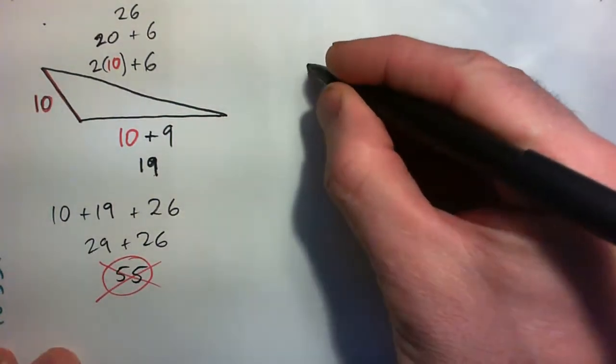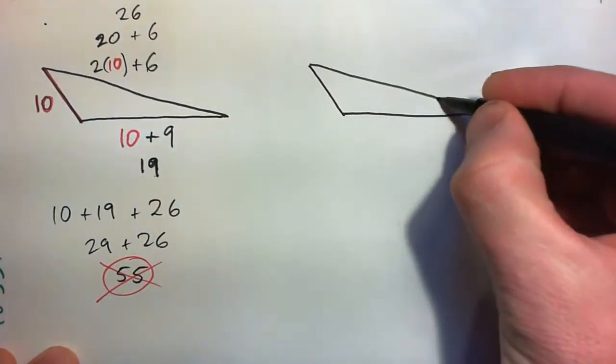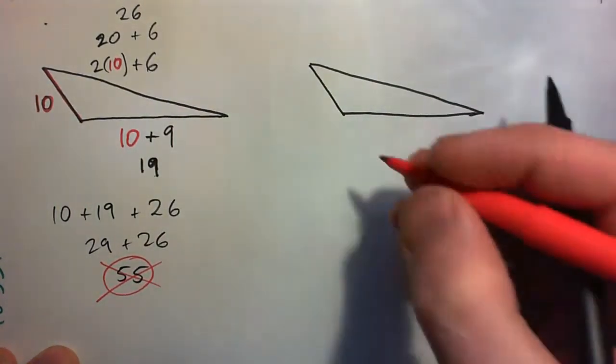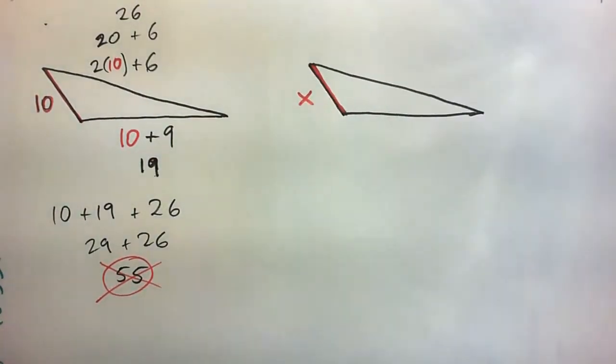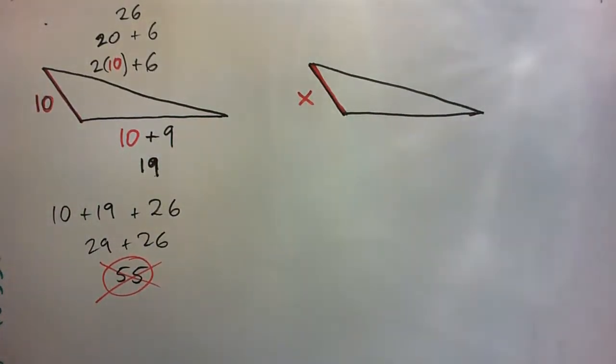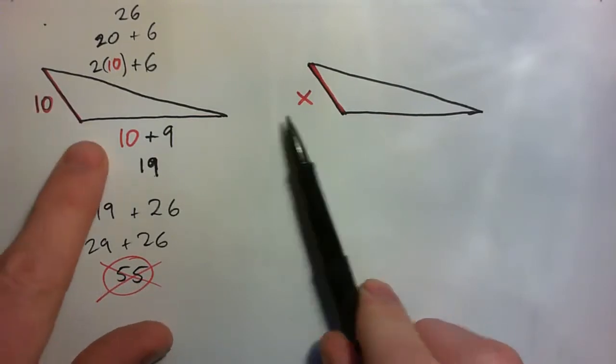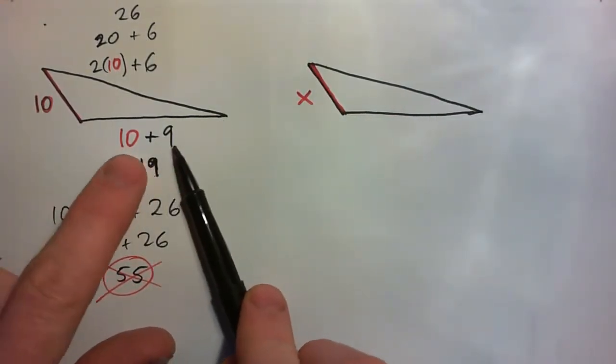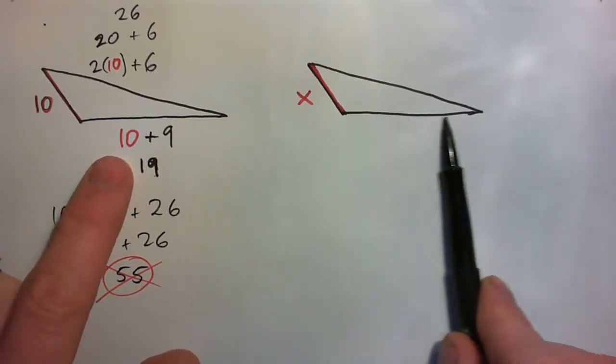So we're going to draw the triangle again. And we've had some fun with the shortest side being 10. Now let's see if we can have some fun with the shortest side being some letter. Let's say X. That's our favorite letter in algebra for some reason. So go ahead and figure out what if the shortest side was 10, this side became what? 19, which is 10 plus 9. So what's this side going to be now?